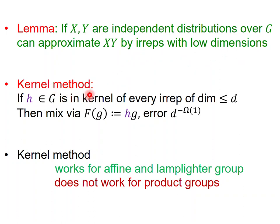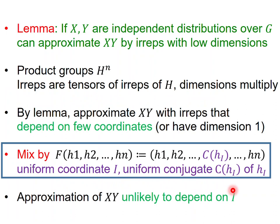One way is the so-called kernel method. We show that if you have an element in the group which is in the kernel of every irrep of small dimension, then you can mix simply by multiplying an element of the group by h, so f of g is just the deterministic function which multiplies by h. Again, the idea is that because h is in the kernel of every low dimension irrep, and since you can approximate x y with irreps of low dimension, multiplying by h does not change x y. This method works for affine and the lamplighter group, and this can be verified just by looking at the irreps of these groups, but it does not work for product groups.